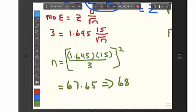And then, you solve that. And, you get 67.65. Round it up to 68. And, that's the minimum sample size to guarantee a margin of error of 3 with 90% confidence.